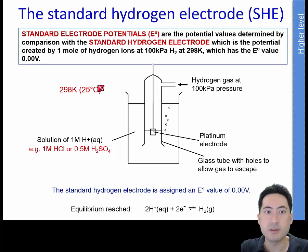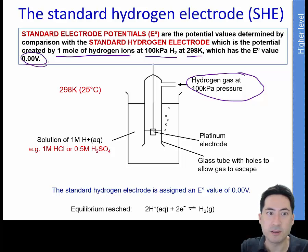Sometimes this is also requested to be drawn. You must get the definitions correct. That includes the one mole of hydrogen ions, that includes the correct pressure of hydrogen gas coming in through the top, and that includes the correct temperature, 298 Kelvin.